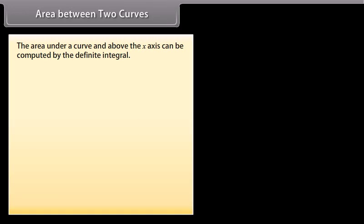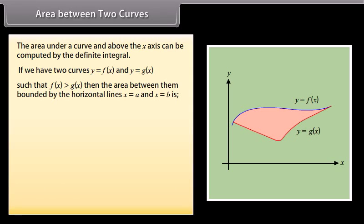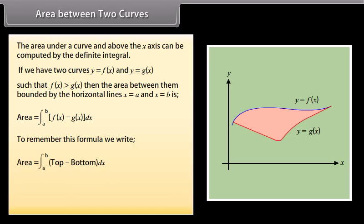The area under a curve and above the x-axis can be computed by the definite integral. If we have two curves y = f(x) and y = g(x) such that f(x) > g(x), then the area between them bounded by the horizontal lines x = A and x = B is: area = ∫ from A to B of [f(x) − g(x)] dx. To remember this formula, we write: area = ∫ from A to B of (top − bottom) dx.